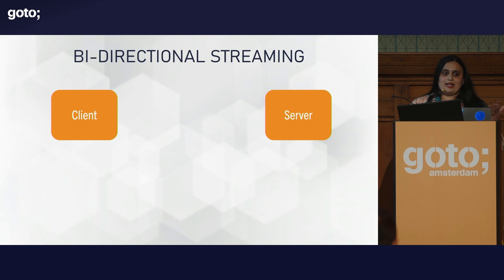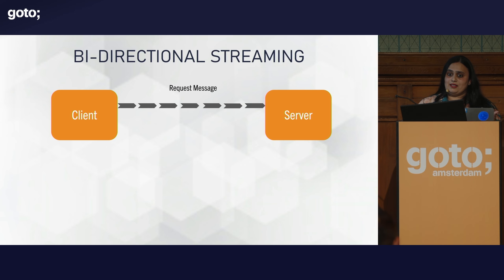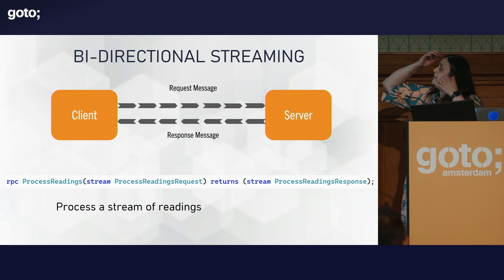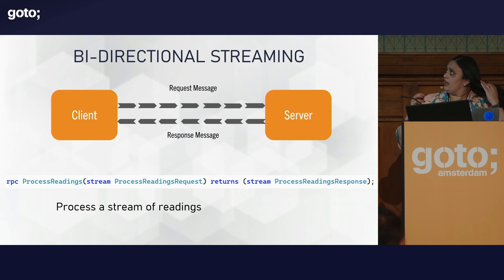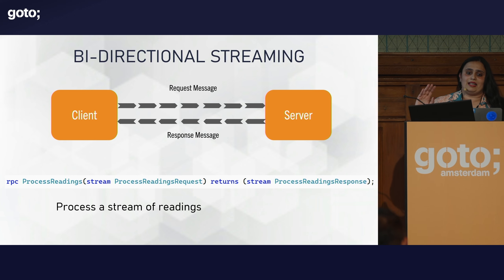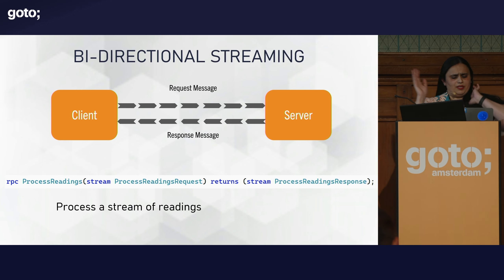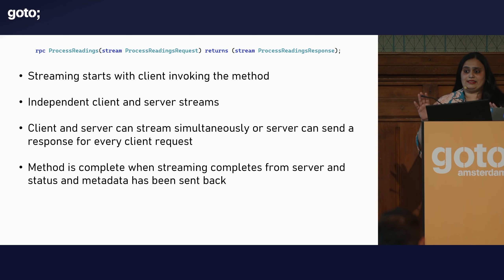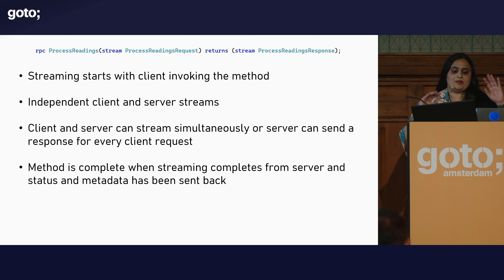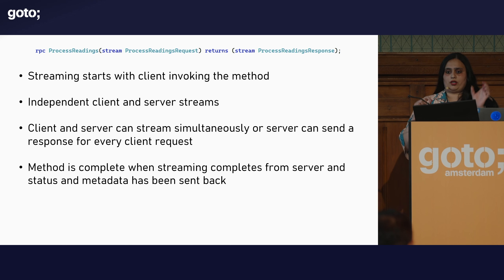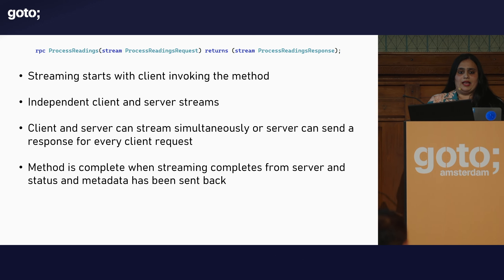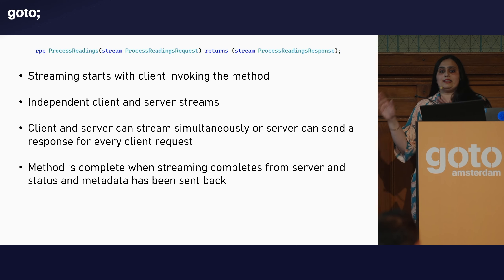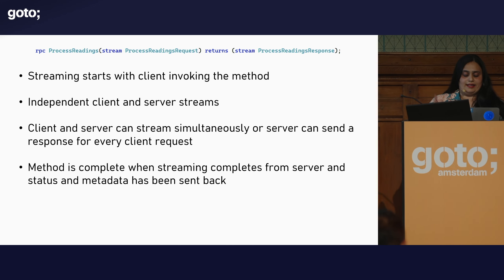Then there is a mixture of both — bidirectional streaming — where the client streams as well as the server streams. The `stream` keyword appears in front of both the request and response message. The client invokes the method, and you can have independent client and server streams — either streaming simultaneously, or the client sends a stream and the server responds to each packet. The method is complete when the server has also completed streaming and all response metadata, headers, and trailers are sent back.